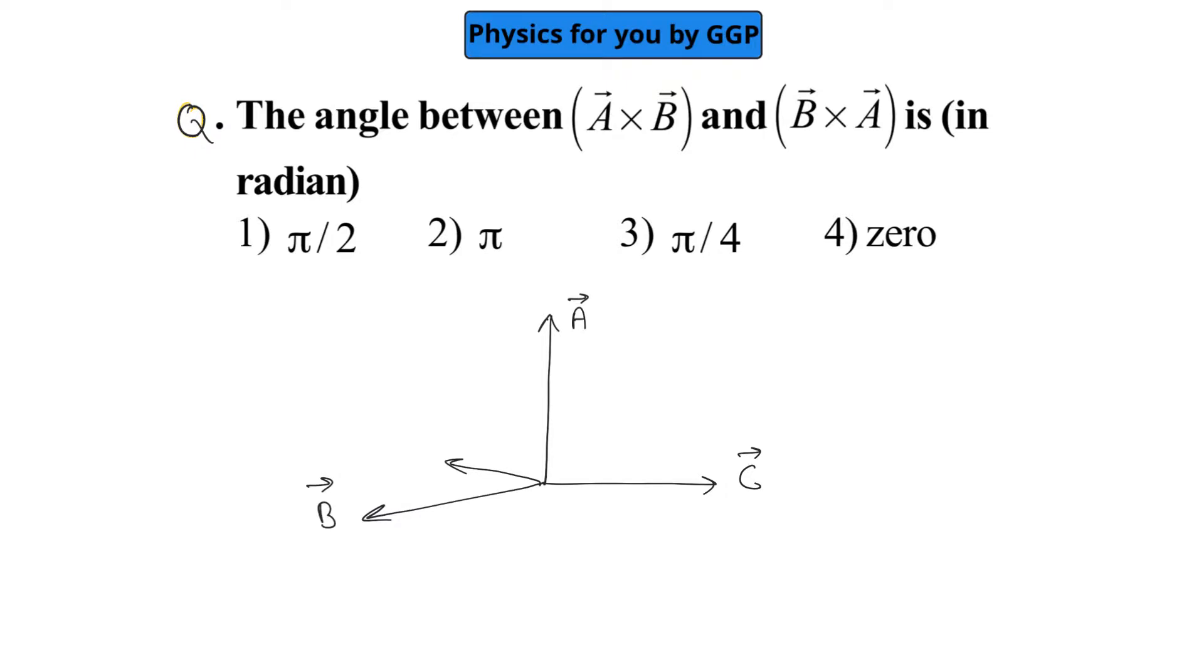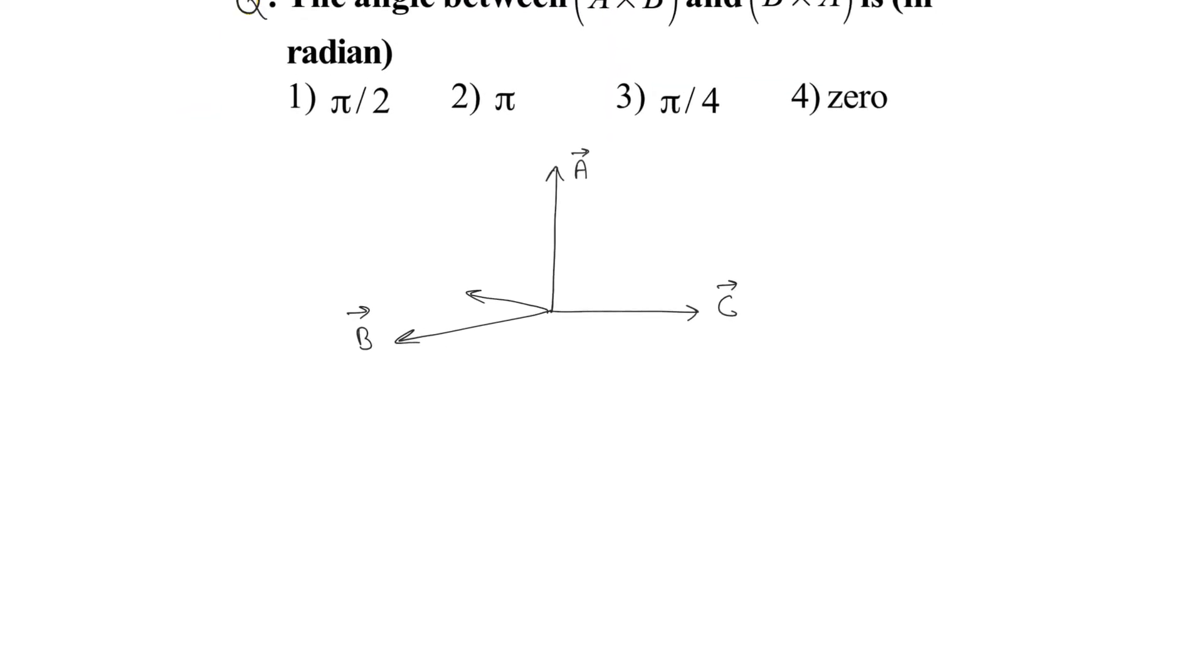So we can say that the direction of A cross B and B cross A will be in opposite directions. As they are in opposite directions, we can say that the angle between them is going to be nothing but 180 degrees, or in radians we can write that is equal to pi radians.